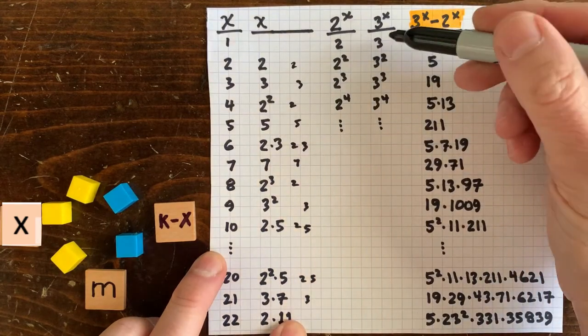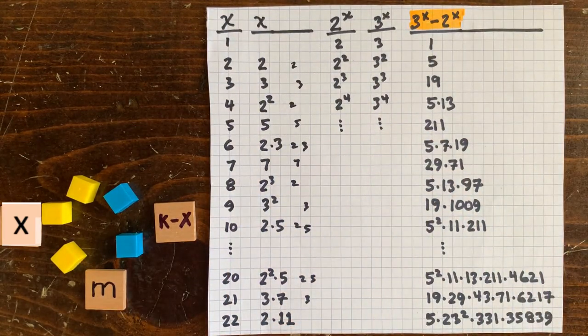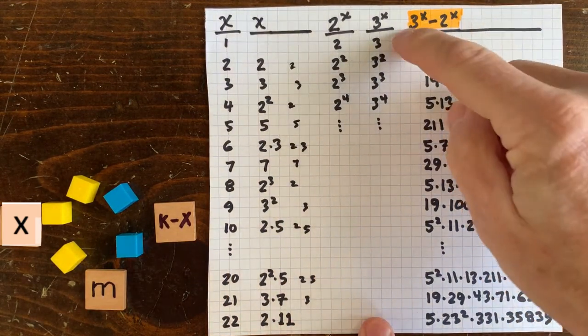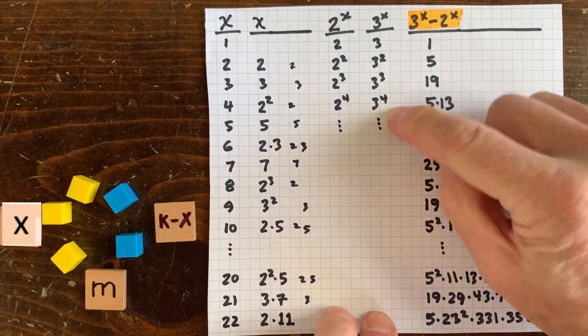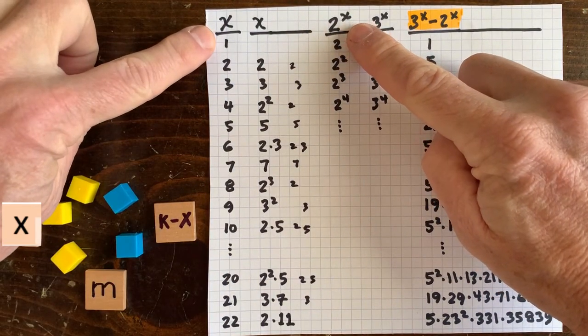How about something like 3 to the x? Well, factorizing this is much easier. 3, 3 times 3, 3 times 3 times 3, same for factorizing 2 to the x.